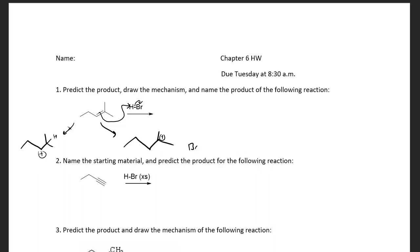Now we have bromine as a nucleophile that can attack. Keep in mind that this carbocation is planar, so bromine can come in from the front or the back. If we were making a stereocenter, I'd have to draw both the R and S products. However, since we have two methyl groups attached to this carbon, it's not a stereocenter, so it's not crucial to specify that in this case.